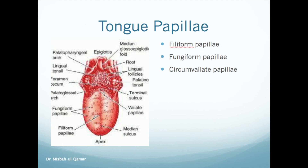Filiform papillae are small and conical-shaped, situated over the dorsum of the tongue, but they have no taste buds. Fungiform papillae are located on the anterior two-thirds of the tongue, are round in shape, and each contains a moderate number of taste buds — up to 10. Circumvallate papillae form a V-shape on the posterior one-third of the tongue; these are large structures and each papilla contains many taste buds — up to 100. Foliate papillae are located along the lateral margins of the tongue.